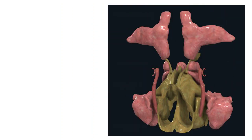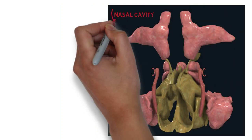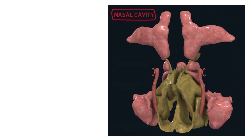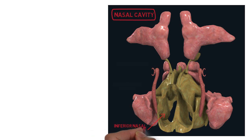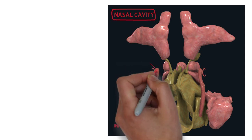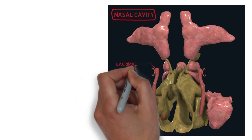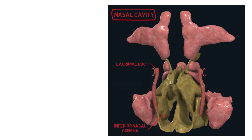The vestibule is lined by hairs called vibrissae, which remove coarse particles from the incoming air. Then it will enter our nasal cavity. There are about three pairs of conchae lining each lateral side. From below, we have the inferior nasal concha. The tears from our eyes will drain through the lacrimal duct and are emptied through the inferior meatus.